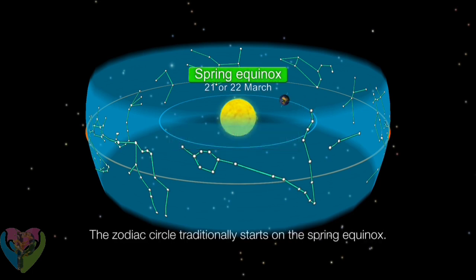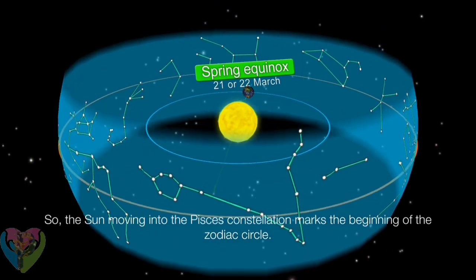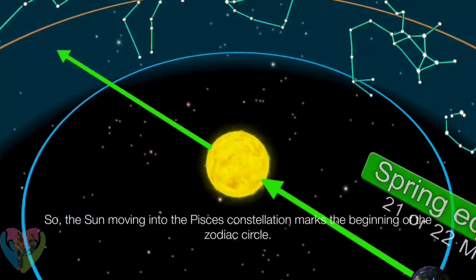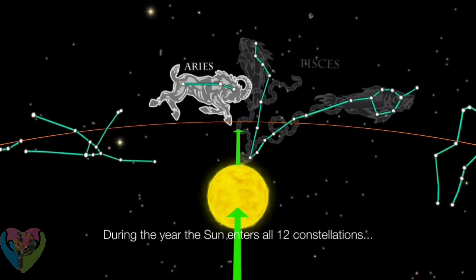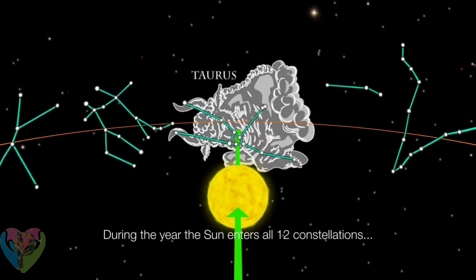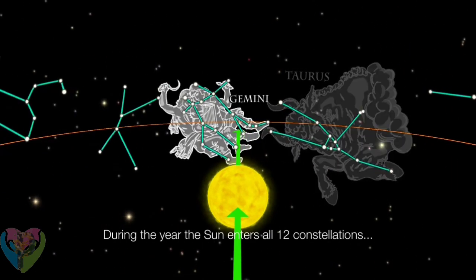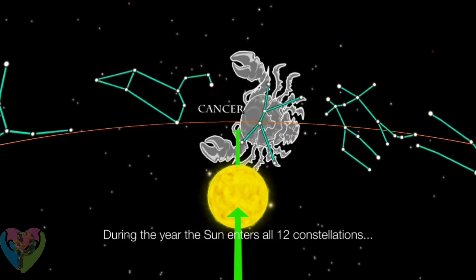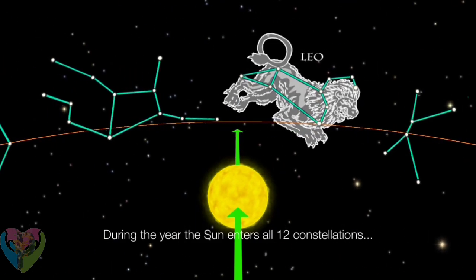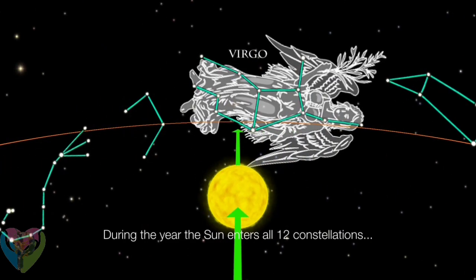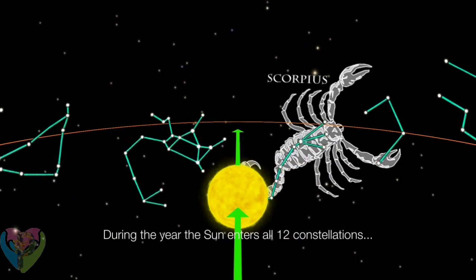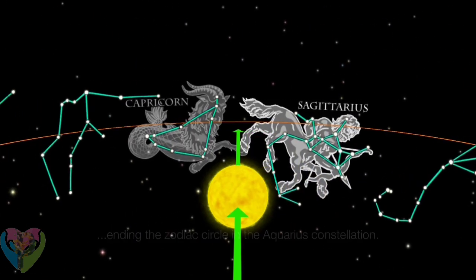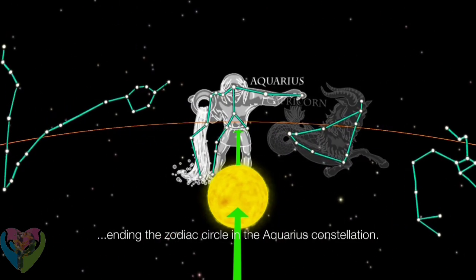The zodiac circle traditionally starts on the spring equinox, so the sun moving in the Pisces constellation marks the beginning of the zodiac circle. During the year, the sun enters all twelve constellations, ending the zodiac circle in the Aquarius constellation.